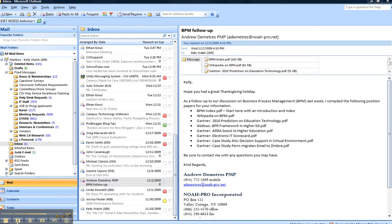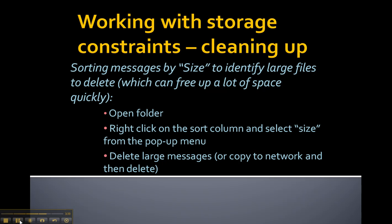The next thing we can do to identify files we might want to get rid of is to sort messages within a folder by size. You may find you have a couple of really big attachments, and by deleting them you instantly free up a good deal of space. The technique is to open a folder, right-click on the sort column, select Size, and then delete the messages.